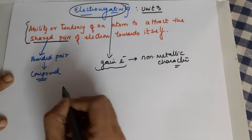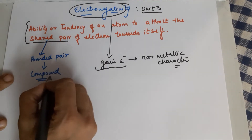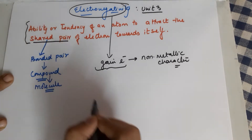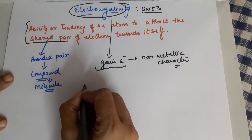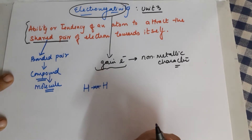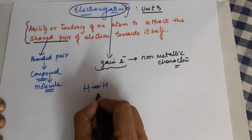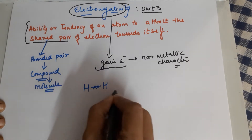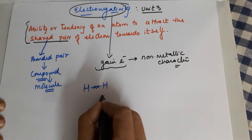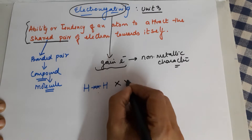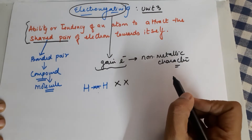Let us do a few examples. Suppose I have a molecule — H bonded to H. We know they share a single pair of electrons, one electron each. Since both atoms are the same, they pull equally. Because they pull equally, neither is able to attract the shared pair, so H₂ is not an example of electronegativity difference.